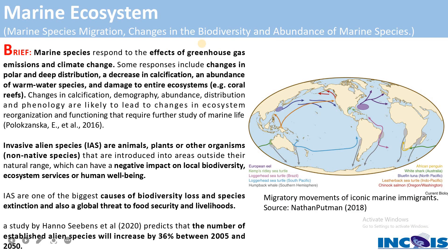Coming to marine ecosystems: these include all marine species, plants, animals, and biodiversity — not only in the coast but across the whole ocean. Marine species are now being affected by greenhouse gas emissions and climate change. Responses include marine species migration toward polar and deep regions, a decrease in calcification, changes in abundance of warm water species, and damage to entire ecosystems like coral reefs due to excessive ocean warming.